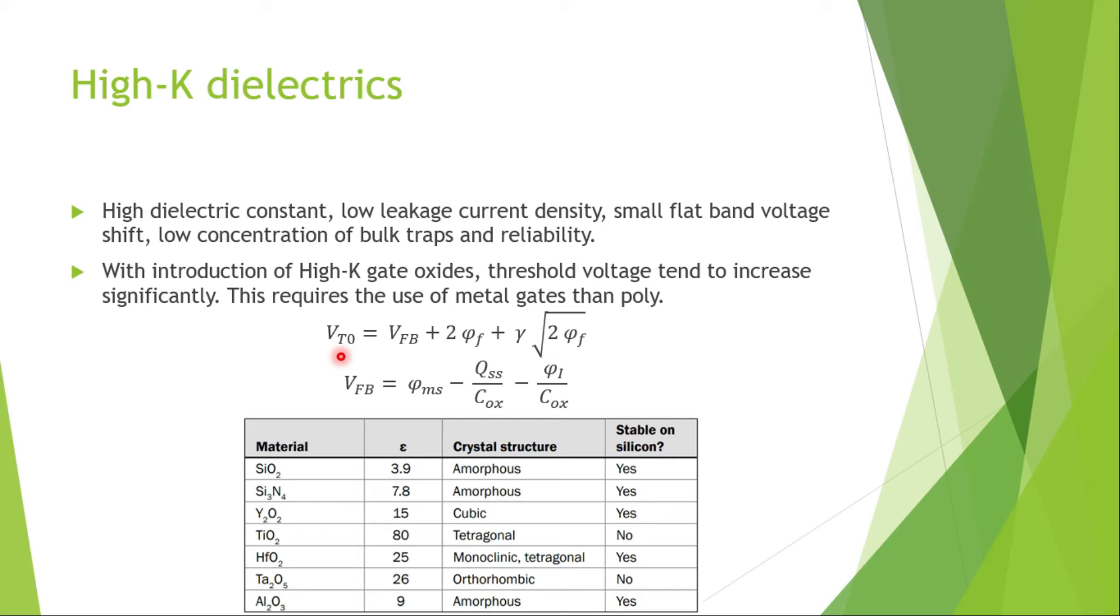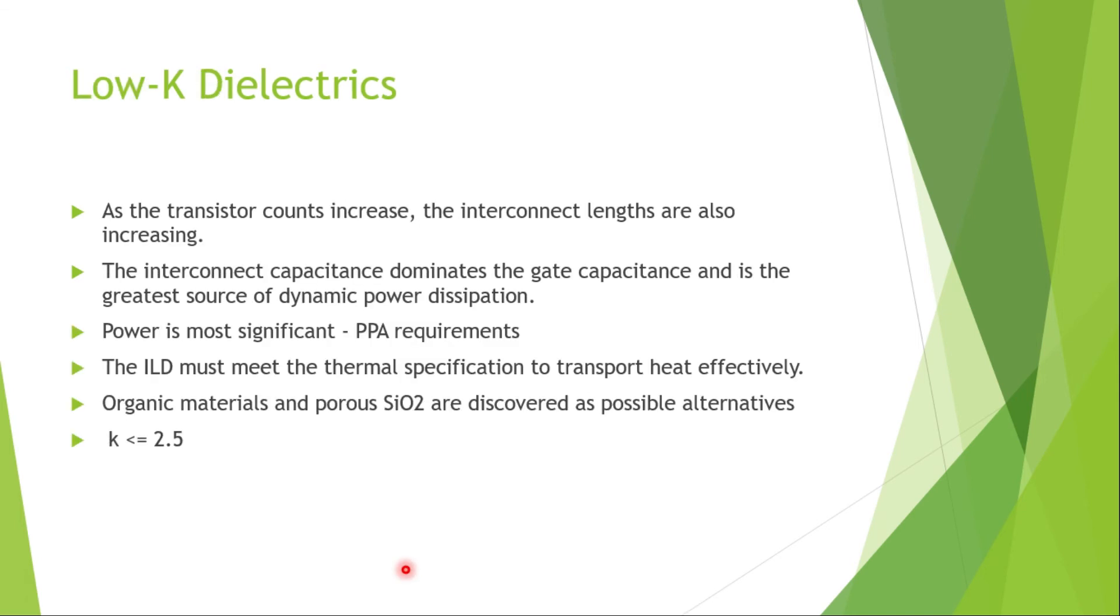So some of the materials that can be used as high-K dielectrics are listed here, and some of them are not stable on silicon, like titanium oxide and tantalum oxide. So these are not stable, and mostly hafnium oxide is preferred because of its highest dielectric constant, which is 25.